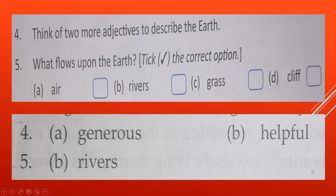See the next question. This is your next question. Fourth, think of two more adjectives to describe the earth. So first is generous and second is helpful. Generous means generous to the people living on earth, and helpful. This is also the adjective of the earth.